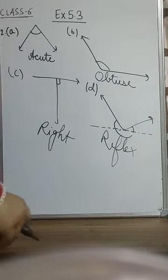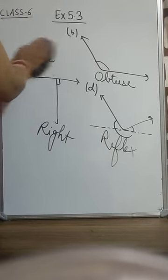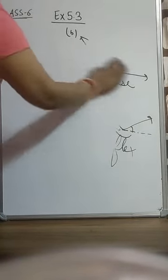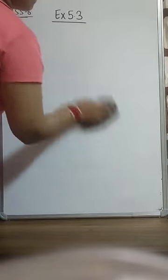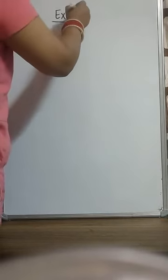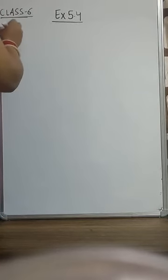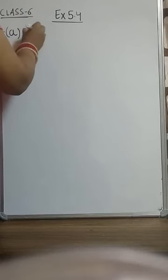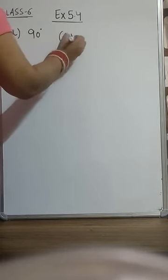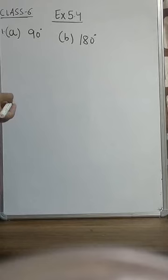So all the types of angles have been covered. Now we are coming to the next exercise, that is exercise 5.4. In part A, you can see a right angle is always 90 degrees. In part B, the measure of a straight line is obviously 180 degrees. Now you have to say true or false — you can do it very easily.